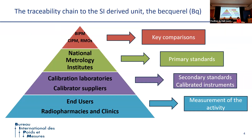For that, the community will have us tackle this challenge, and here I remind the pyramid of the traceability. At the bottom of the pyramid, we can find the radiopharmacies and the clinics. They can measure in-situ the activity using a calibrator or they can purchase a standard from a secondary calibration laboratory. At the second level of the pyramid, we can find the supplier of calibrators and also the secondary calibration laboratory.